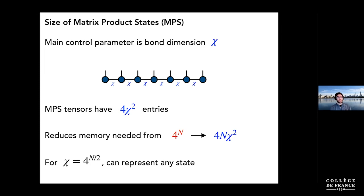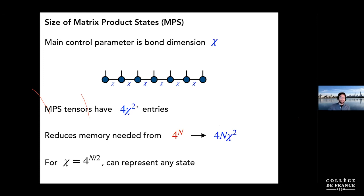The most important thing to know about matrix product state tensor networks is the control parameter called the bond dimension chi — in the math literature it's called the tensor train rank. This controls cost: each tensor has chi-squared entries, and there are N of them, so instead of memory four-to-the-N you only need four times N times chi-squared. Most interesting computations scale like chi-cubed. If you can find cases where wave functions are representable with chi of only tens or hundreds, these are computations you can do quickly and reasonably on a computer.